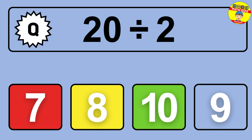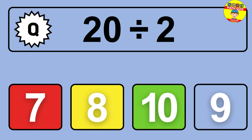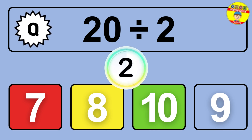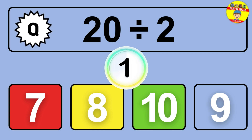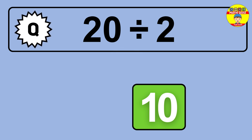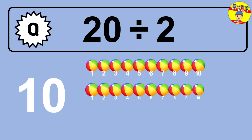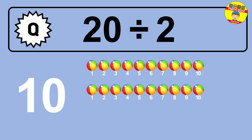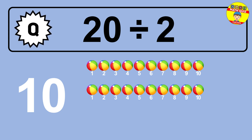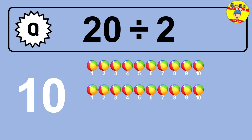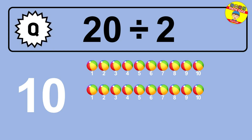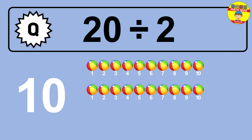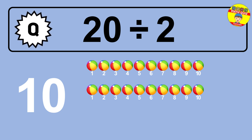What is 20 divided by 2? Picture this — you have 20 objects to divide into groups of 2. How many groups can you make? Let's think about it. Ready to find out? Let's break it down. Let's imagine you have 20 objects. Can you picture them lined up? Now think about splitting them equally into smaller groups.